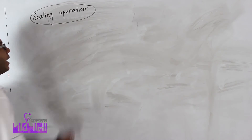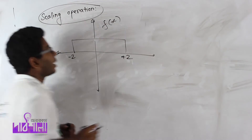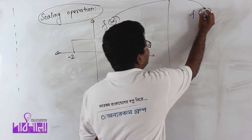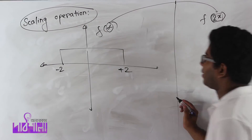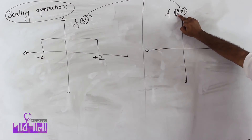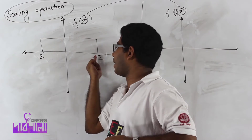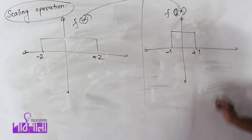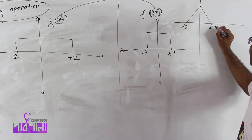Now this is the scaling operation. In the scaling operation, this is f of x with a point of minus 2 and a point of plus 2. I will tell you that f of x equals f of x. If the graph of x equals x, this is f of x, and if we take the graph of x and multiply it, we can count the graph of x. This is minus 1 and this is plus 1. Now we can see the basic graph — this is minus 3 and this is plus 4.